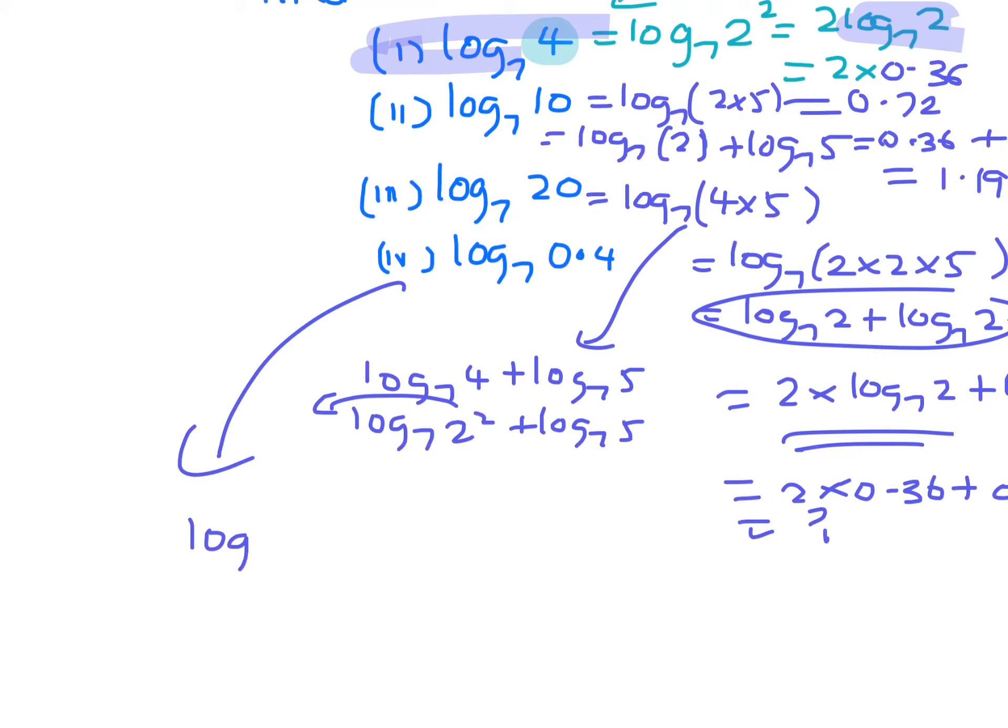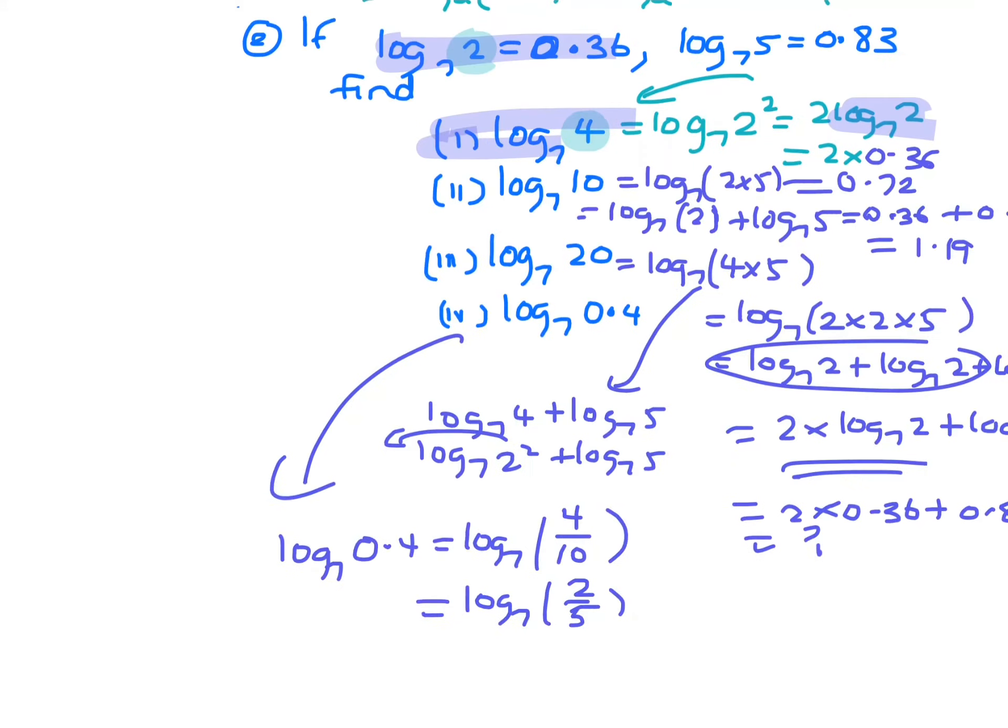Now when you're doing log 7 of 0.4, you need to make it a fraction. So it's 4 tenths. So that's log 7 2 on 5. So log 7 2 on 5, that would be log 7 2 minus log 7 5. Log 7 2 is 0.36, log 7 5 is 0.83. So 0.36 minus 0.83 is minus 0.47.